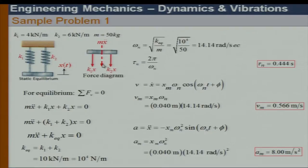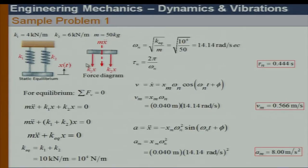The equation of motion becomes: m·ẍ + K₁·x + K₂·x = 0. That is my vertical equilibrium. You can see K₁ and K₂ can be combined to make an equivalent system: K_eq = K₁ + K₂. I can forget about the two springs and just use K_equivalent times x as my spring force.